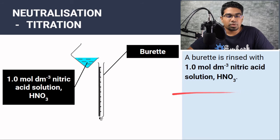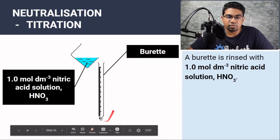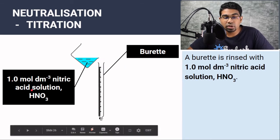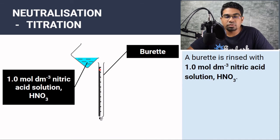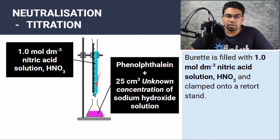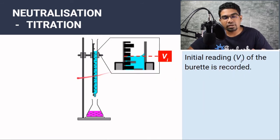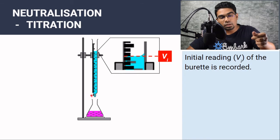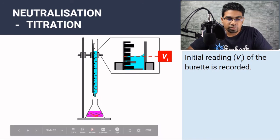Next, we add the acid from a burette. The burette scale starts from 0 at the top to 50 (or 100) at the bottom. For the same reasons as with the pipette, we first rinse the burette with the nitric acid solution we are going to use, then fill the burette with the nitric acid solution. It doesn't matter exactly how much you fill it since we will record volumes. Once filled, we clamp the burette to the retort stand above the conical flask. Before allowing any acid in, we record the initial volume reading.